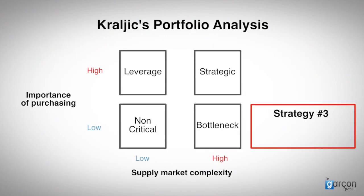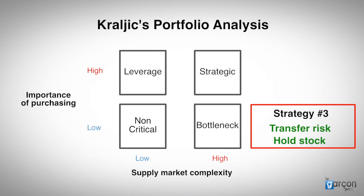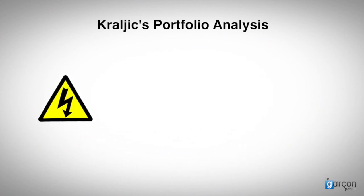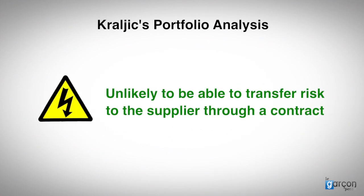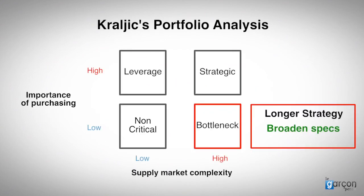In this case, strategy three is to accept dependence upon the supplier and seek to mitigate the risk through negotiating a contract, or holding stock of spare parts, or perhaps developing a contingency plan. However, when we have weak bargaining power, we are unlikely to be able to transfer much risk to the supplier through a contract. So a longer term strategy might be to broaden the specifications of the product or to search for new suppliers.